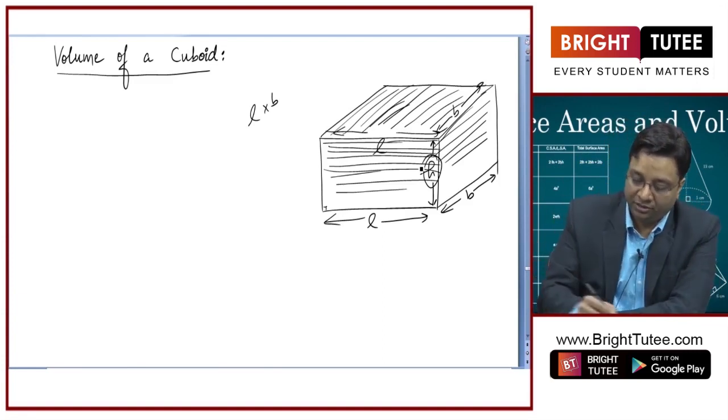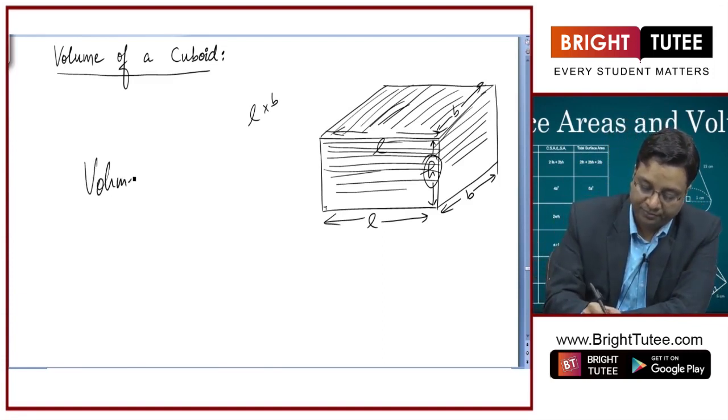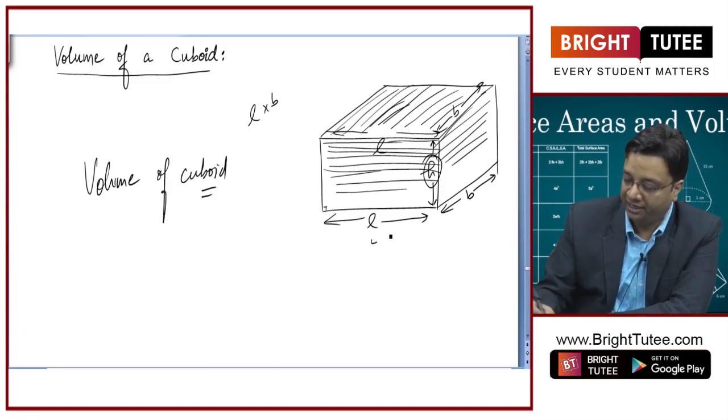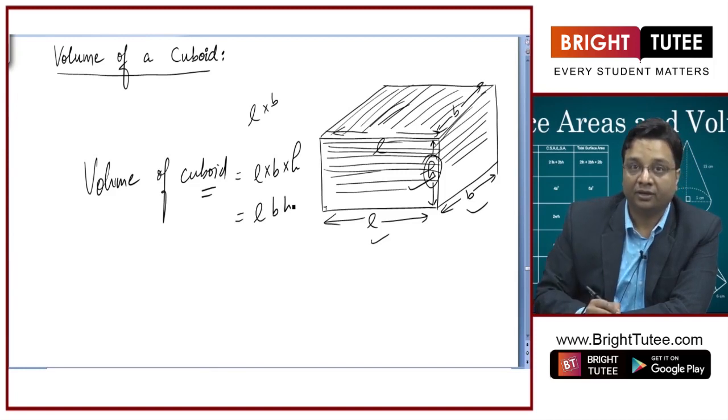So, if I ask you the volume of cuboid with these dimensions L, B and H, you will say length into breadth into height, hence L, B, H.